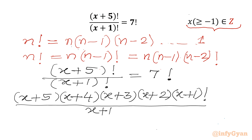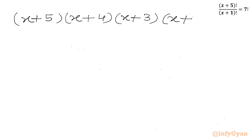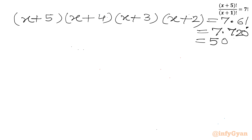The (x+1)! terms cancel from numerator and denominator, leaving (x+5)(x+4)(x+3)(x+2) equal to 7!. Now 7! equals 7 times 6!, and 6! is 720, so 7! equals 5040.